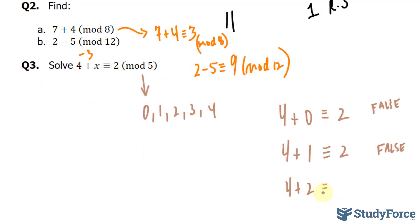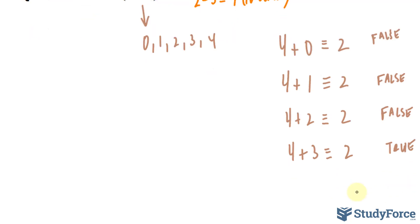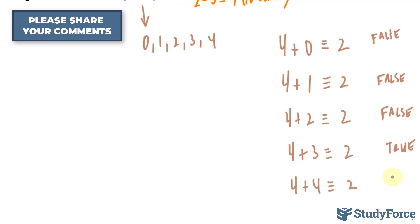How about 4 plus 2? 4 plus 2 is 6. 5 fits into 6 once with a remainder of 1. So this statement is false. 4 plus 3, 4 plus 3 is 7. 5 fits into 7 once with a remainder of 2. So this is true. And the other one, by deduction, should be false as well.